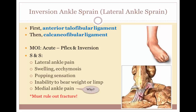An ankle sprain refers to the tearing of ligaments in the ankle and accounts for approximately 40% of all athletic injuries. 85% of ankle sprains occur on the outside or lateral side of the ankle and are known as inversion ankle sprains. Medial ankle sprains occur less frequently and are usually associated with fractures or other traumatic events. Inversion sprains are so common due to our lopsided anatomy — the lateral malleolus extends further down than the medial malleolus, giving the medial side more stability.